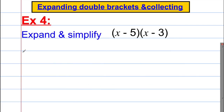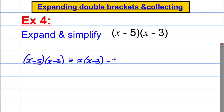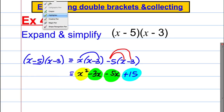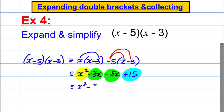Next: x subtract 5, multiplied by x subtract 3. Write as x multiplied by the second bracket, then negative 5 multiplied by the second bracket. Expanding carefully with negatives: x squared, negative 3x, negative 5x, and negative 5 times negative 3 is positive 15. Combining: x squared subtract 8x add 15. A quadratic expression.